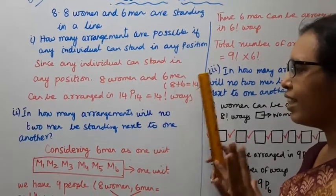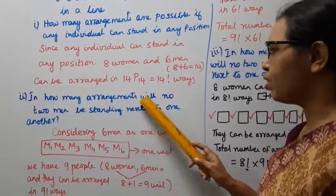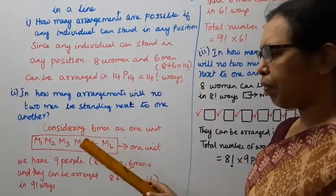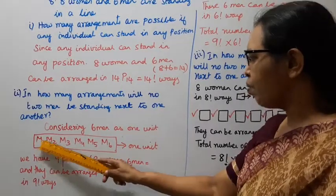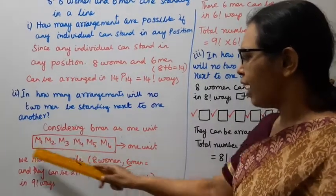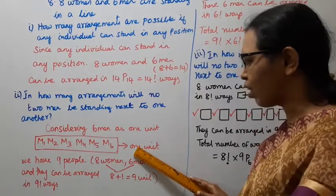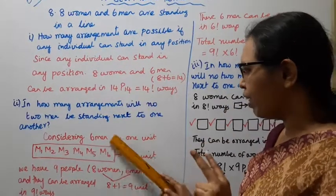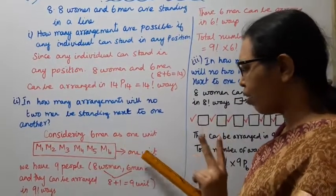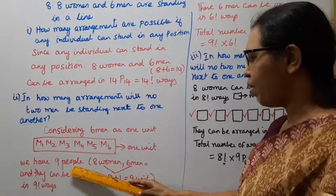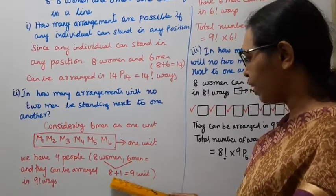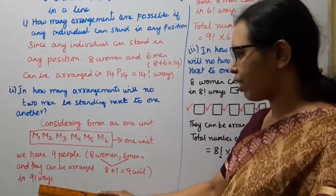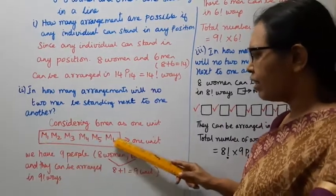Second: In how many arrangements will no two men be standing next to one another? Then, considering 6 men M1 to M6 as one unit, then 8 women, 6 men as one unit gives us 9 people. 8 women, 6 men, then 8 plus 1 equals 9 units, and they can be arranged in 9 factorial ways.